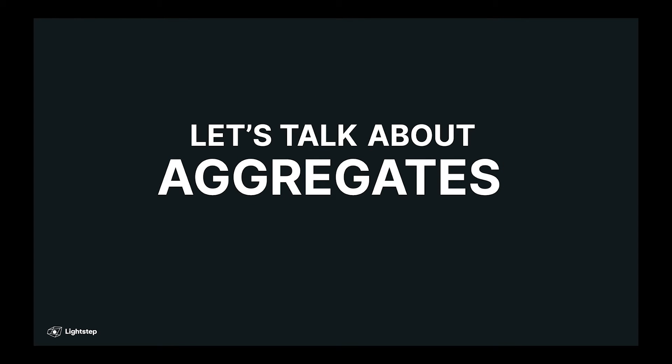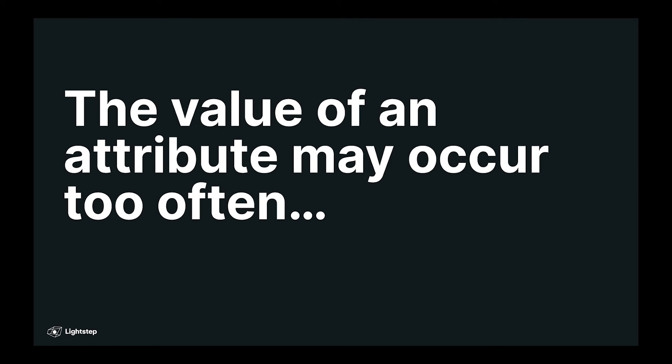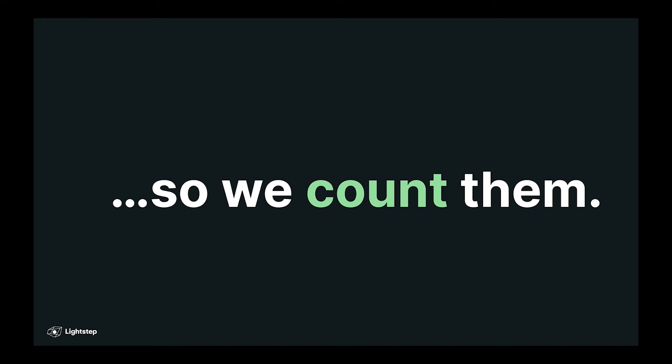Okay, so those are events. But let's talk about events in aggregate. When we're looking at events over time, we want to find patterns and be alerted when bad patterns appear. So some of these patterns might be an attribute occurring too often, like the number of errors or the 500 status code. So you want to be able to count how many times that attribute shows up on an event.